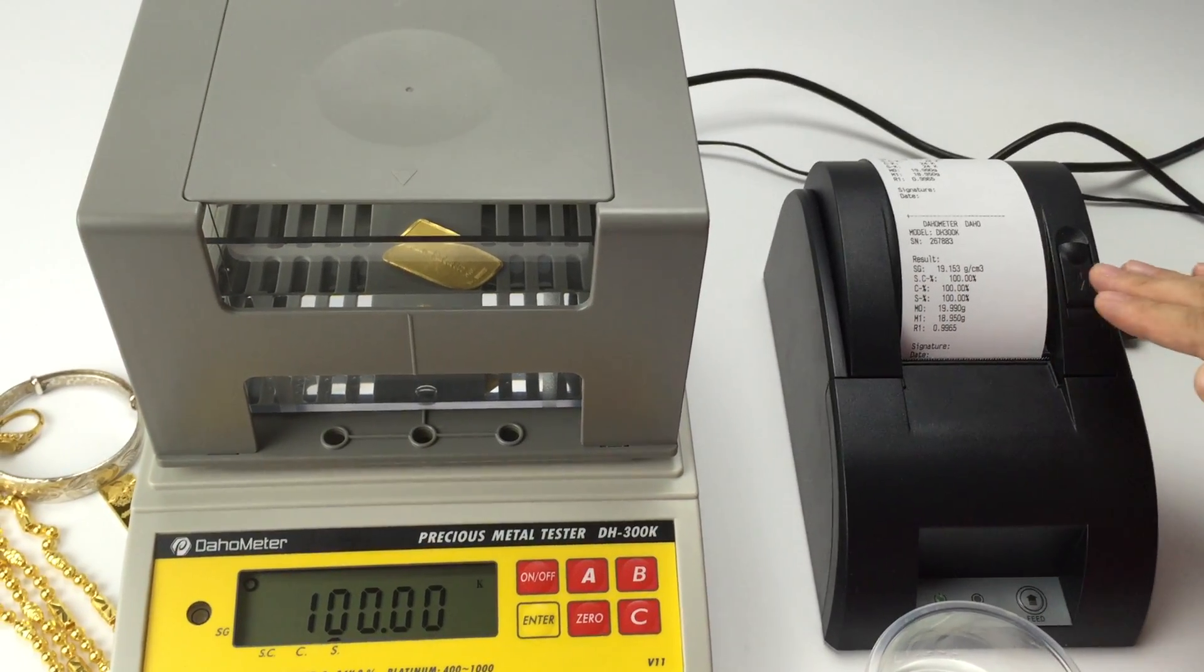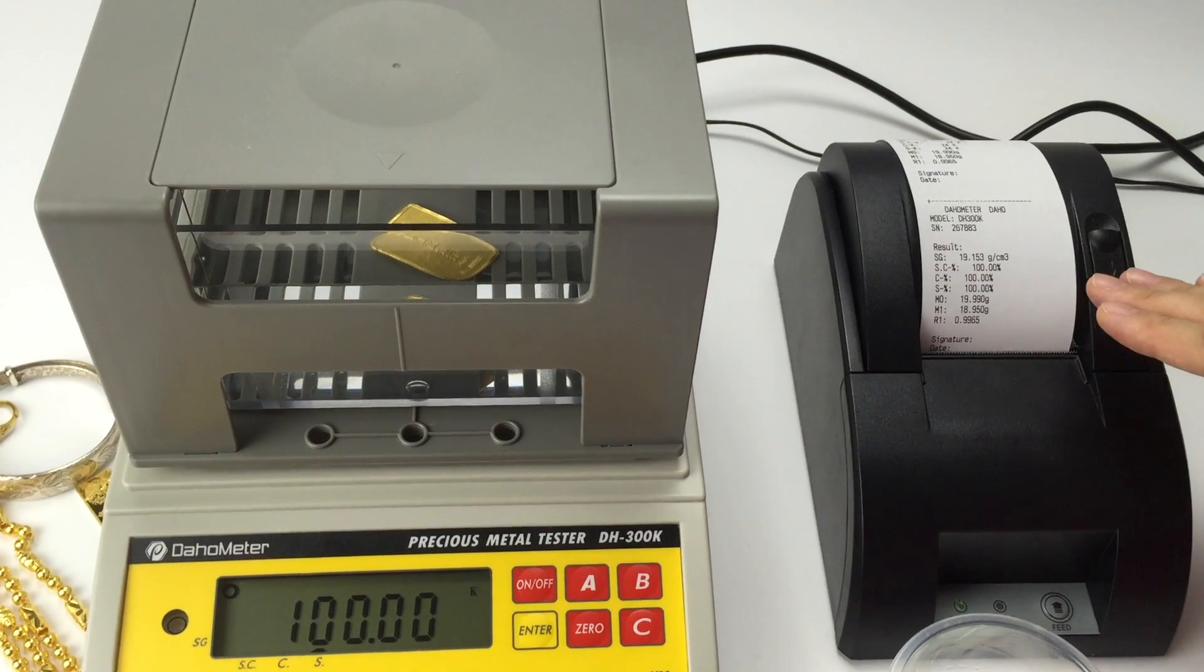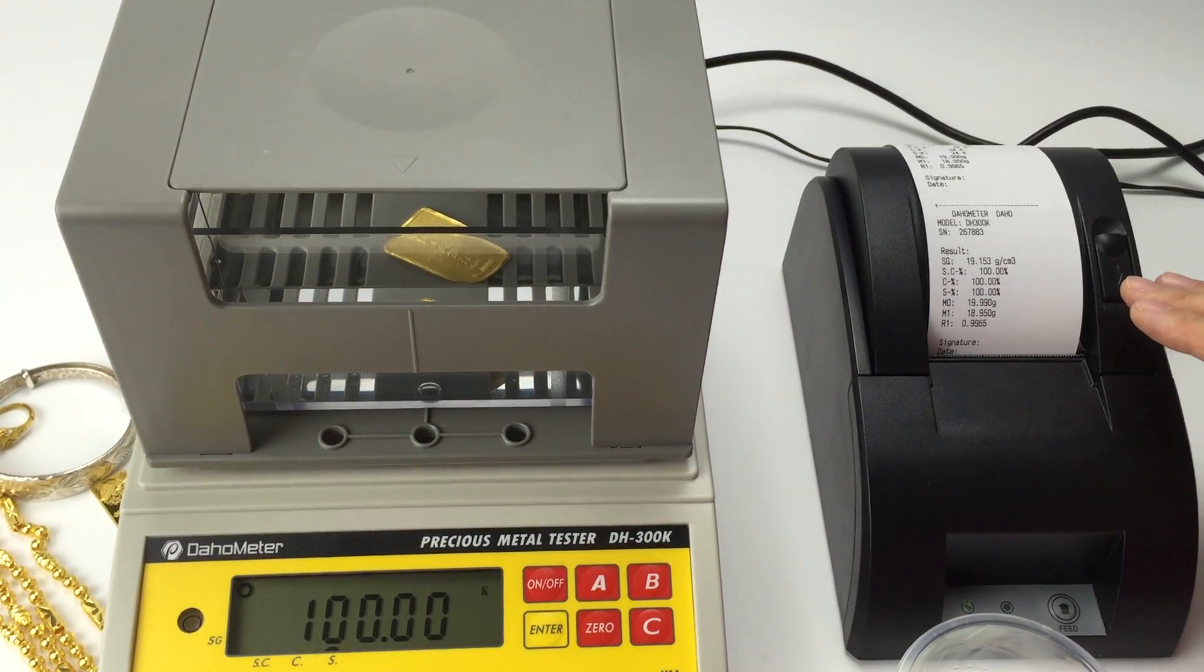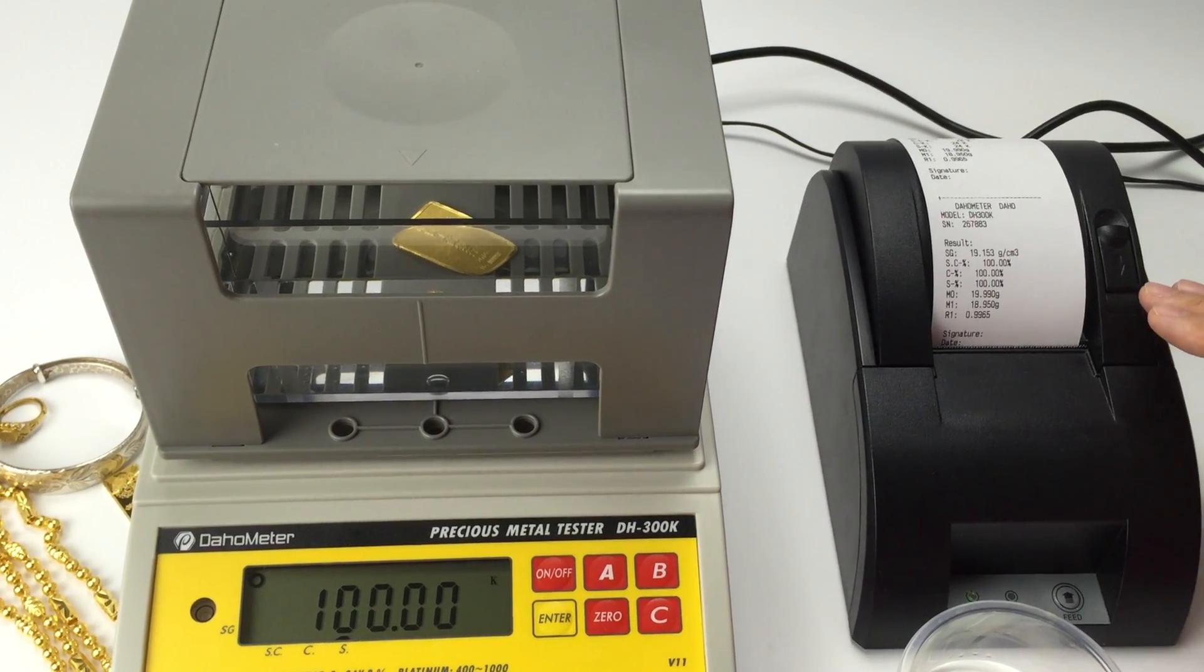SG is the density value. SC is the purity percentage for gold, silver, copper.